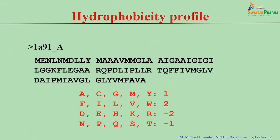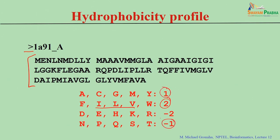We will see how to construct a plot with an example. We have a sequence in FASTA format — it starts with the greater-than symbol. I assigned some numbers for the 20 amino acid residues based on their hydrophobic behavior. For example, highly hydrophobic residues like isoleucine, valine, leucine, and phenylalanine get a value of 2; less hydrophobic residues get 1; polar residues get minus 1; and charged residues get minus 2.